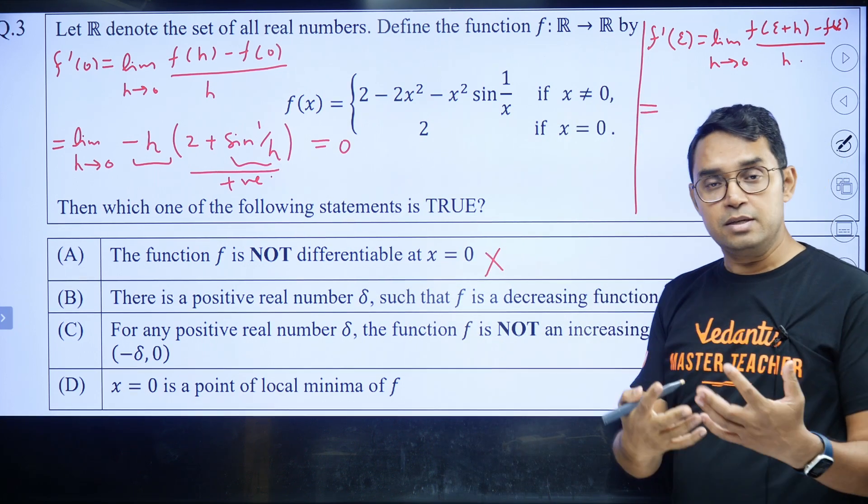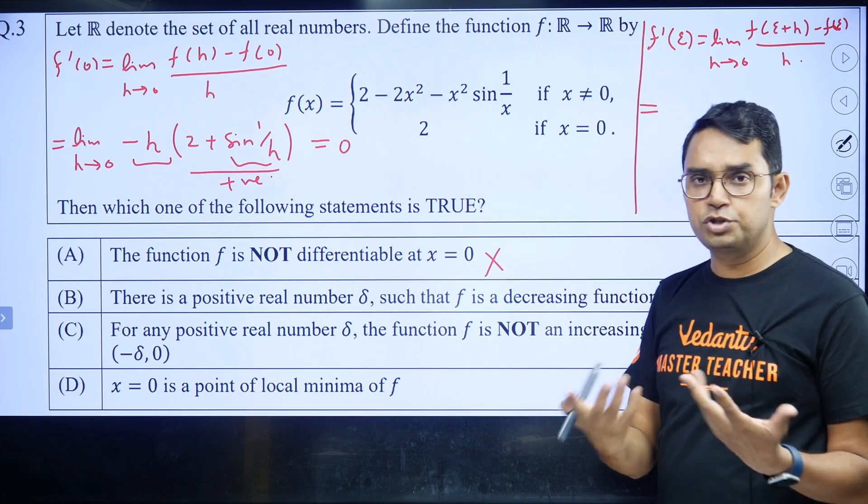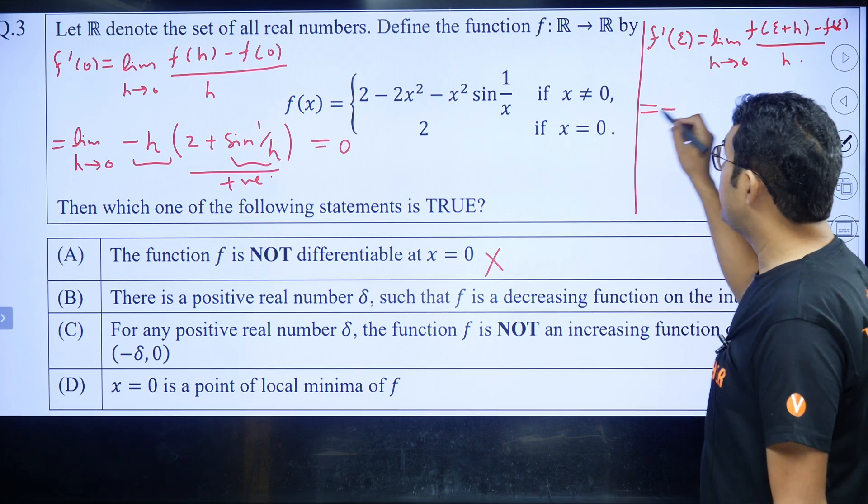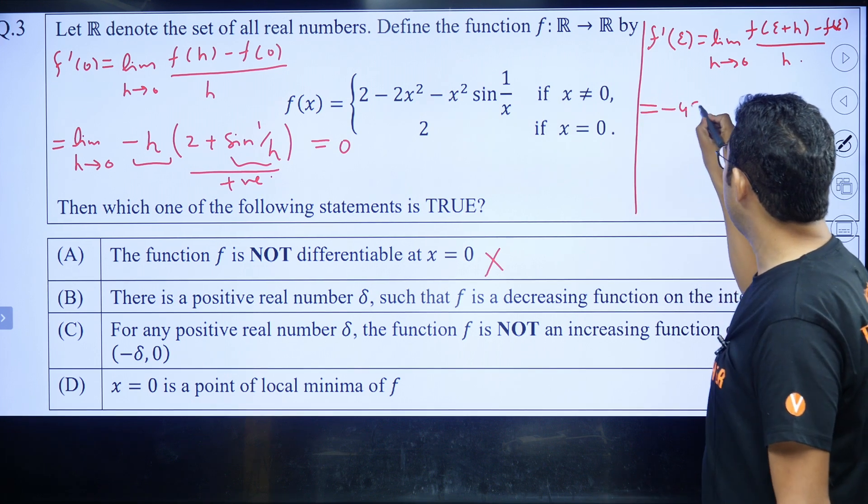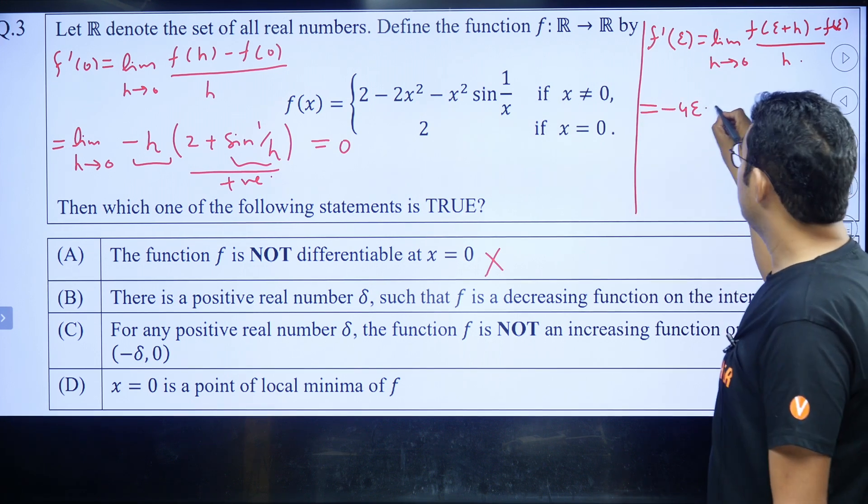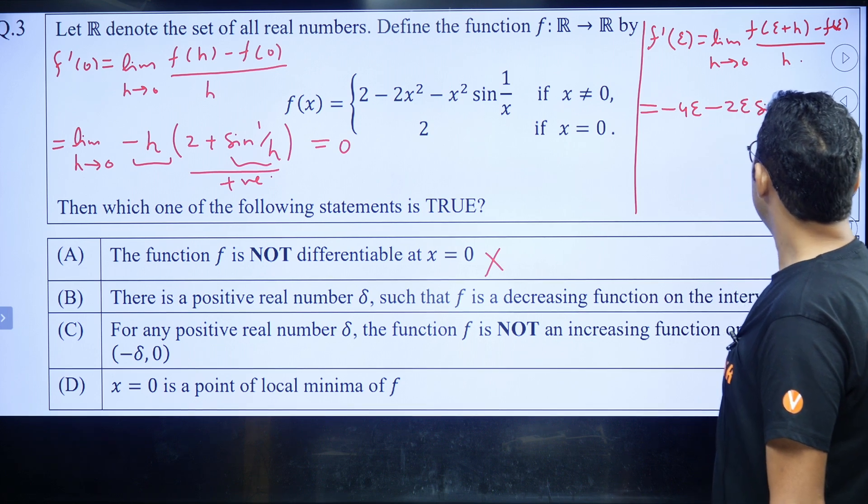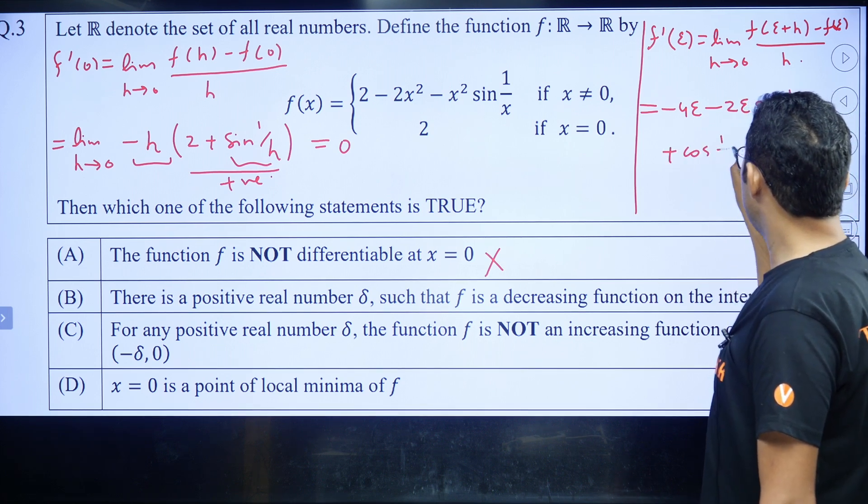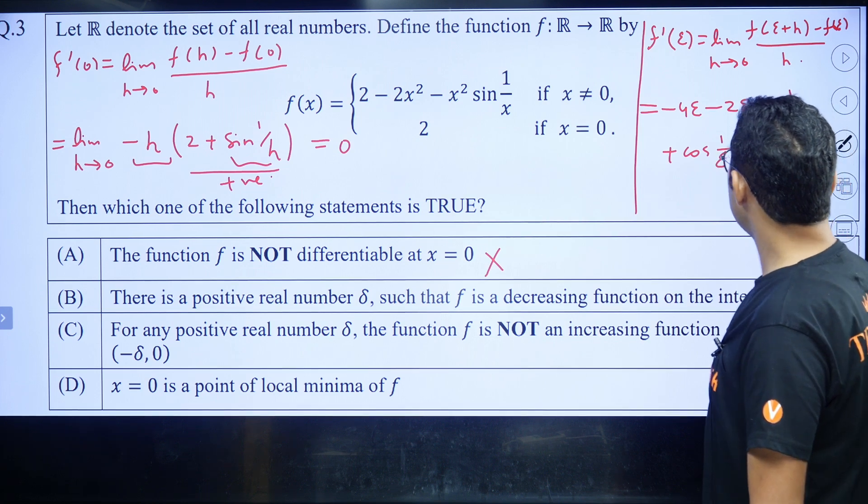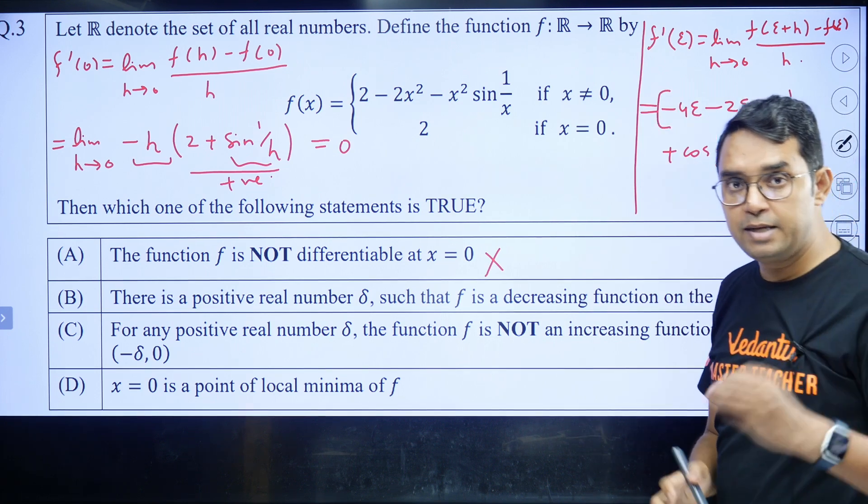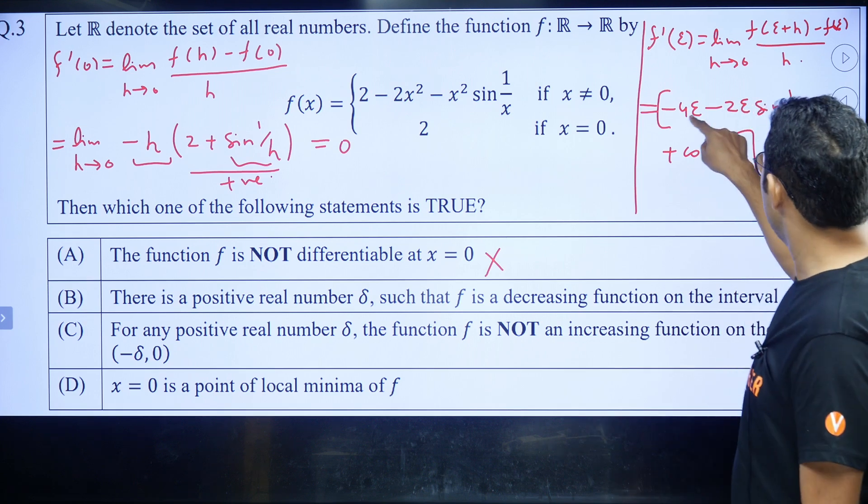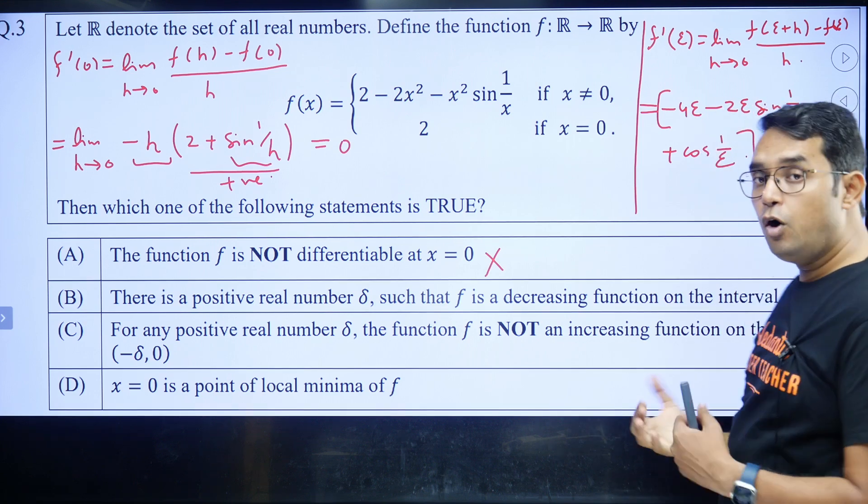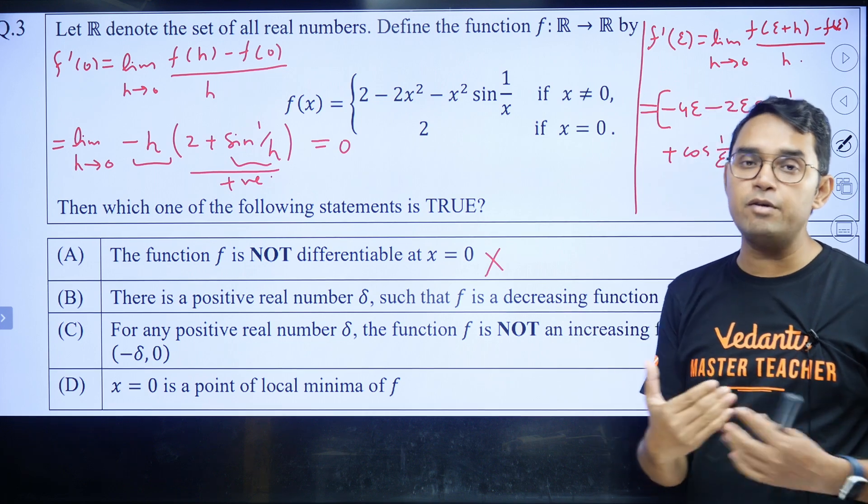We should just do the differentiation using product rule or quotient rule. So if you do the differentiation at ε, you will be getting -4ε - 2ε sin(1/ε) + cos(1/ε). Now, the important thing is as ε is very small, you will find -4ε - 2ε sin(1/ε) tending to 0, but cos(1/ε) will be oscillating between -1 to 1.